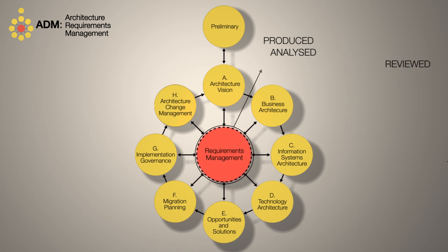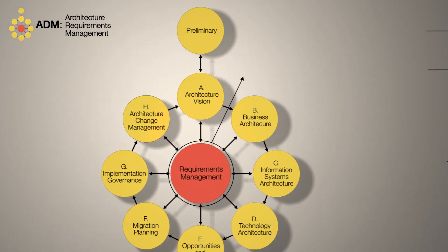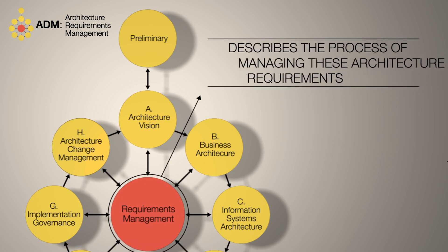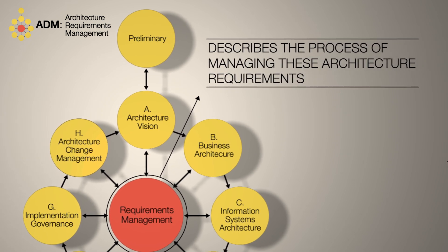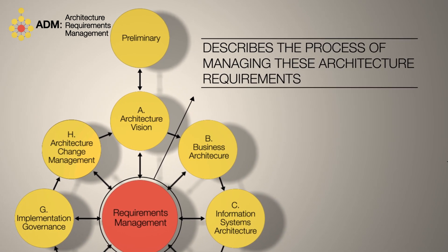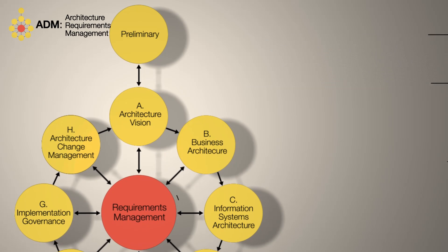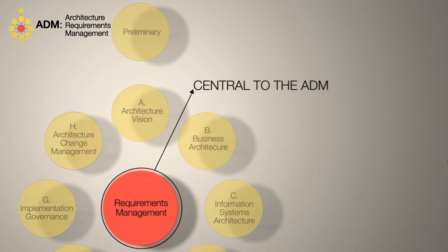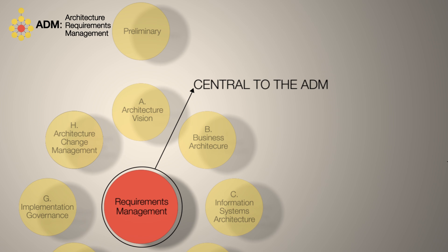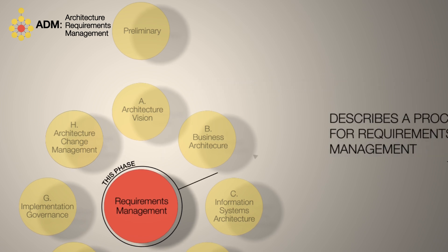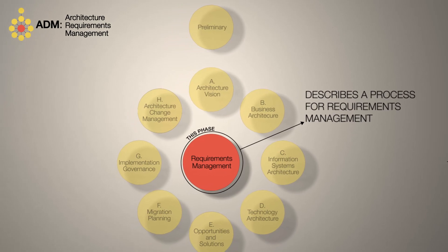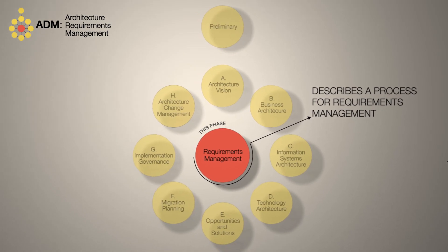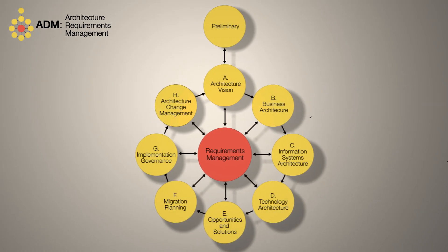Requirements are produced, analysed and reviewed in each of the phases of the ADM. The requirements management phase describes the process of managing these architecture requirements throughout the ADM. This phase is central to the ADM, which is why it's shown at the centre of the ADM crop circle diagram. It describes a process for requirements management and how that process links to the other phases of the ADM.